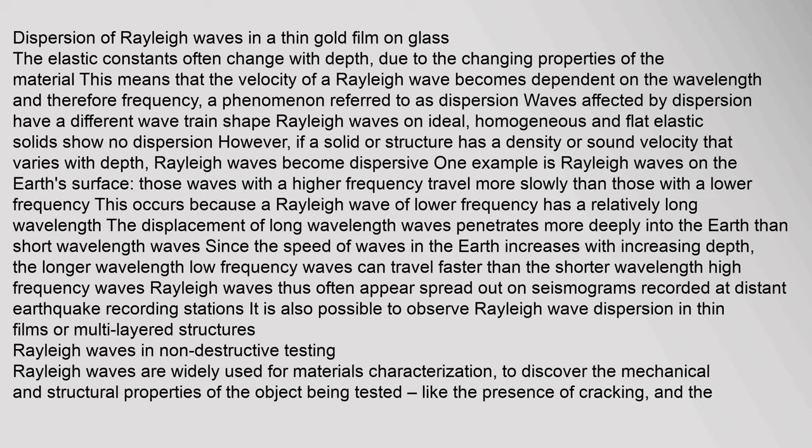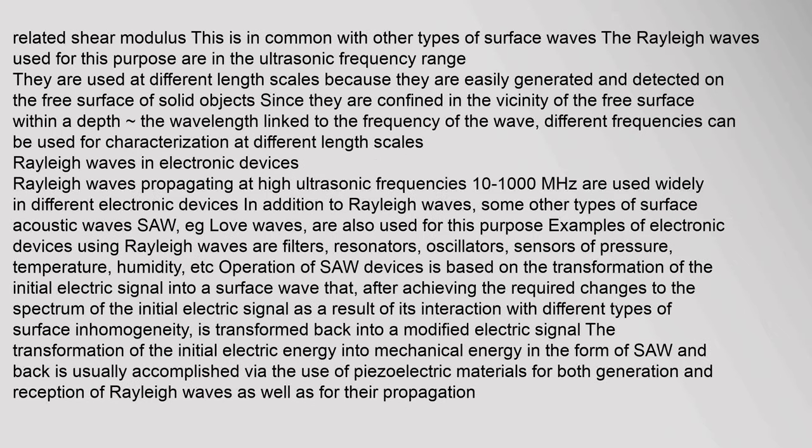Rayleigh waves thus often appear spread out on seismograms recorded at distant earthquake recording stations. It is also possible to observe Rayleigh wave dispersion in thin films or multi-layered structures. Rayleigh waves are widely used for materials characterization, to discover the mechanical and structural properties of the object being tested, like the presence of cracking and the related shear modulus. The Rayleigh waves used for this purpose are in the ultrasonic frequency range. They are used at different length scales because they are easily generated and detected on the free surface of solid objects, and different frequencies can be used for characterization at different length scales.